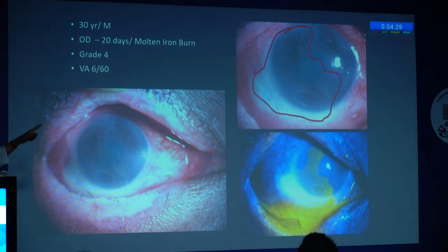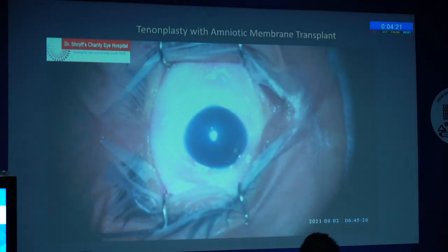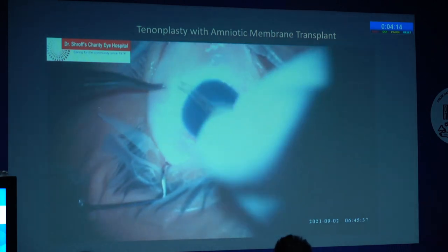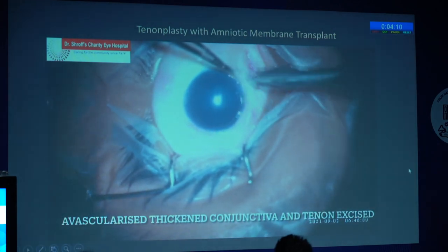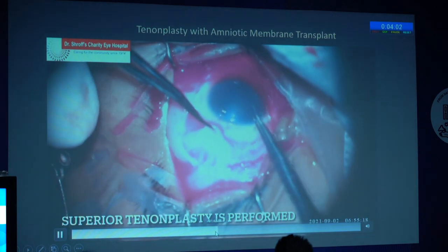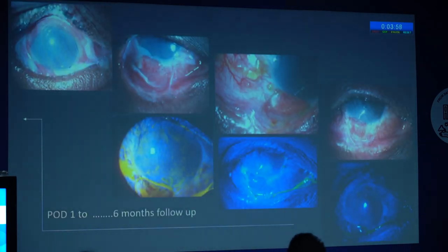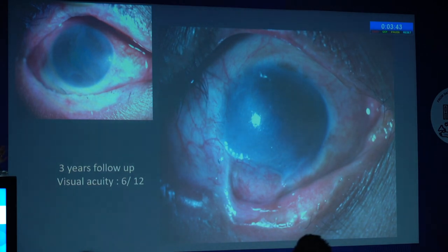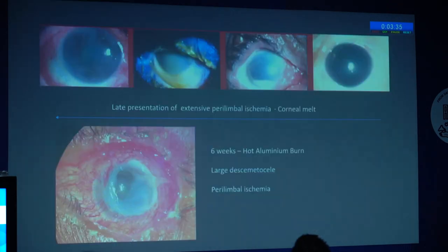At presentation you will notice perilimbal ischemia — it is missed and different from simple surface inflammation. Apart from amniotic membrane, doing a tenonplasty is helpful — a procedure of getting vascularization to the perilimbal ischemia by pulling it all the way from near the muscles, bringing it anteriorly, and suturing it near the area of ischemia. At three years follow-up, this patient had a visual acuity of 6/12, with a lower symblepharon which required no management and some scarring with which he was fine. With tenonplasty and amniotic membrane transplant, you can heal a patient after thermal injury.